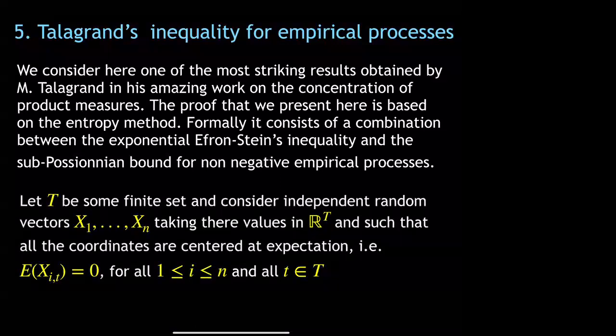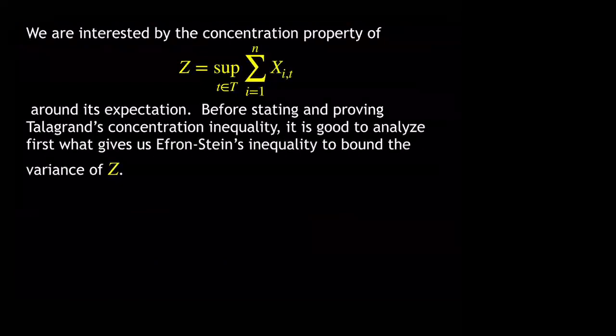We prove this by combining the Efron-Stein exponential inequality established last time and the sub-Poissonian bound proved for non-negative empirical processes. We consider independent random vectors whose components are centered, and we look at the quantity Z which is the supremum of the sum of x_i(t), studying its concentration around its expectation.